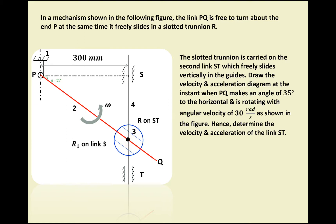There is a Coriolis component because R and R1 are coincident points — R is on the vertical link and R1 is on link PQ and the trunion. In this case, the only fixed point known is P, and the center distance is 300 mm. From P, draw a line at a distance of 3 cm using space diagram scale 1 cm = 100 mm. Then at 35 degrees draw link PQ of any length so it intersects vertical link ST, and measure length PR1 to get the actual dimension.